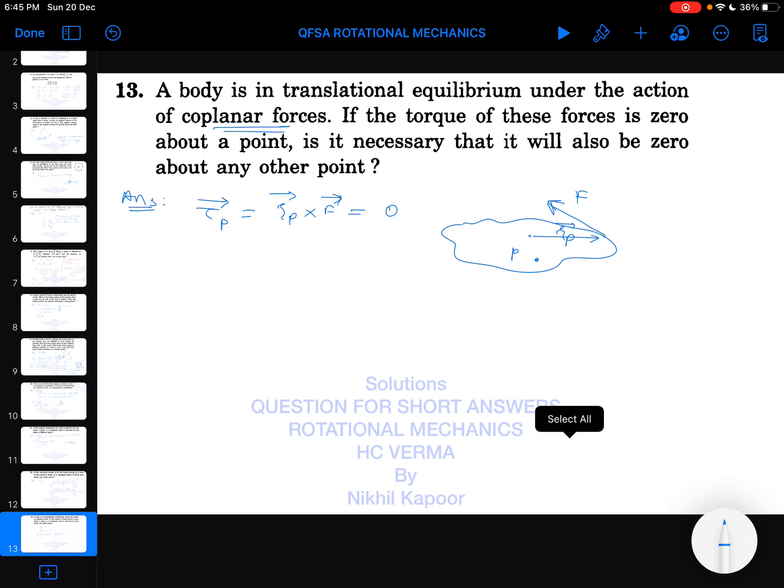Now if I take any other point on the body anywhere, say point Q here, so the torque about point P... the torque about point Q would be equal to rq bar cross F bar. And if I join Q to P or P to Q, this is the line joining from P to Q.